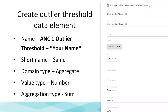To make the outlier threshold, first you must make your data element. In the maintenance app, click data elements, click the plus button. Give the data element a name — for example, 'ANC1 outlier threshold – your name' — and a short name. Set domain type to aggregate, value type to number, and aggregation type to sum.